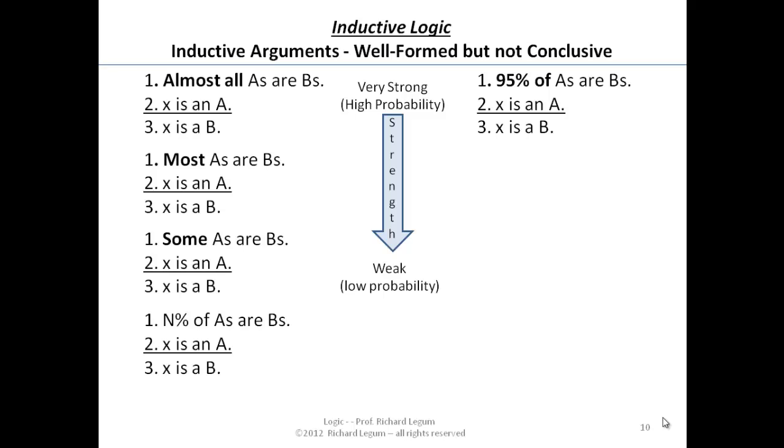If 95% of A's are B's, we'd say almost all A's are B's. X is an A, therefore X is a B. So you'd think almost all, we're at a pretty high range, 95% probability of the conclusion being true when the premises are true. Pretty high probability.